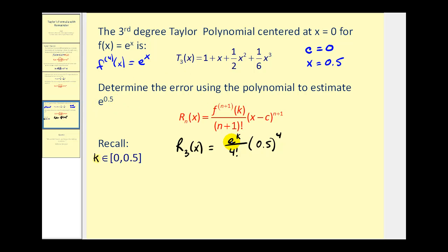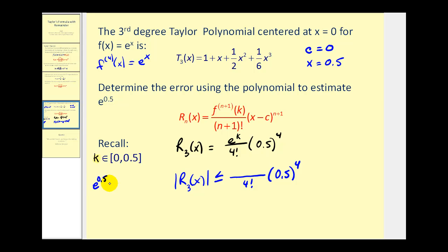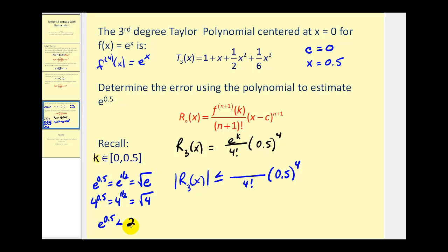We need to determine a different value to use for e to the k. The absolute value of the error will always be less than or equal to some maximum value for e to the k divided by four factorial times 0.5 to the fourth. The maximum value on this interval would be e to the 0.5, which equals the square root of e, and e is approximately 2.718. Four works well because four to the 0.5 equals the square root of four, which is two, and four is greater than e. So e to the 0.5 is less than two, and we use two as the maximum value of the fourth derivative on this interval.